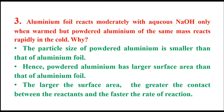Powder aluminium has a larger surface area than that of aluminium foil. The larger the surface area, the greater the contact between the reactants and the faster the rate of reaction.